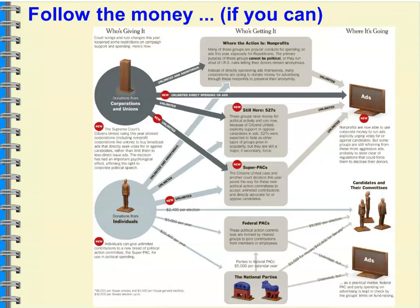Can you follow the money with super PACs? Eventually yes, but chances are it's after the election. 527s? Same thing — they'll probably withhold their donor lists until after the election. 501c4s? The money is dark — you don't know who they are, who they're donating to, in what amounts, or why. The darkest of dark money.